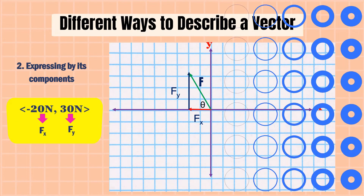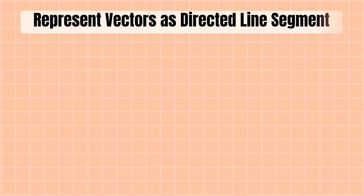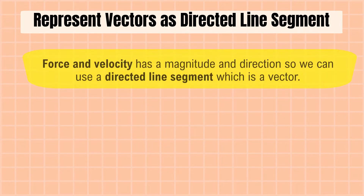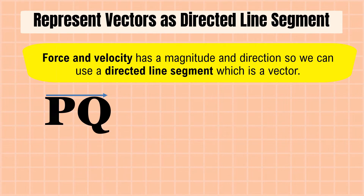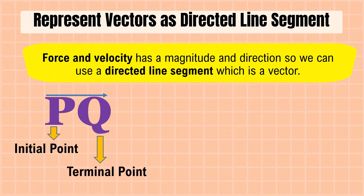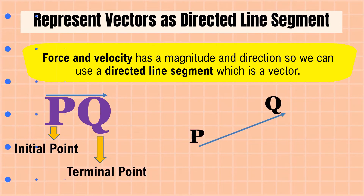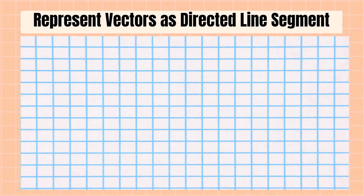Next, we're going to discuss representing vectors as directed line segments. Force and velocity have magnitude and direction, so we can use a directed line segment, which is a vector. For example, vector PQ: P is the initial point and Q is the terminal point. Okay, let's answer some problems involving directed line segments.